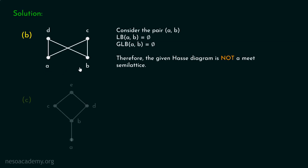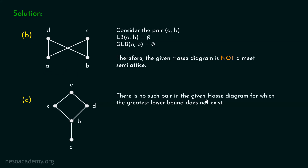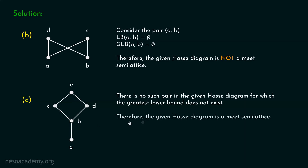Let's consider figure c. In this figure, there is no such pair for which the greatest lower bound does not exist. You can verify this — there is no such pair in the given Hasse diagram for which the greatest lower bound does not exist. Therefore, the given Hasse diagram is a Meet Semilattice.